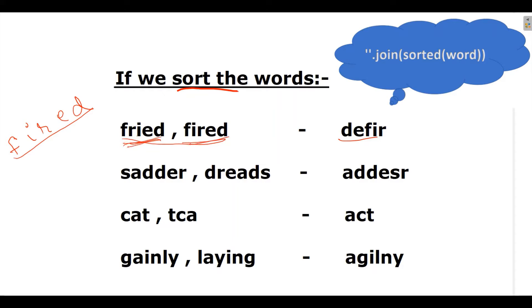Whether it is fried, if I sort the letters of fried, I will get D, F, I, R. And if I sort fired, I will get the same. Similarly, with sadder and dreads, cat and TCA, gainly and laying. So, it's very simple.